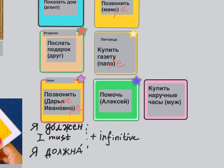We've got СУББОТА — Saturday. And here we get the verb ПОМОЧЬ — to help — Алексею. It's a man, so you get rid of the last letter: not Алексей but Алексею. В СУББОТУ Я ДОЛЖНА ПОМОЧЬ АЛЕКСЕЮ. On Saturday I must help Алексею. If it's a man speaking: Я ДОЛЖЕН ПОМОЧЬ АЛЕКСЕЮ.